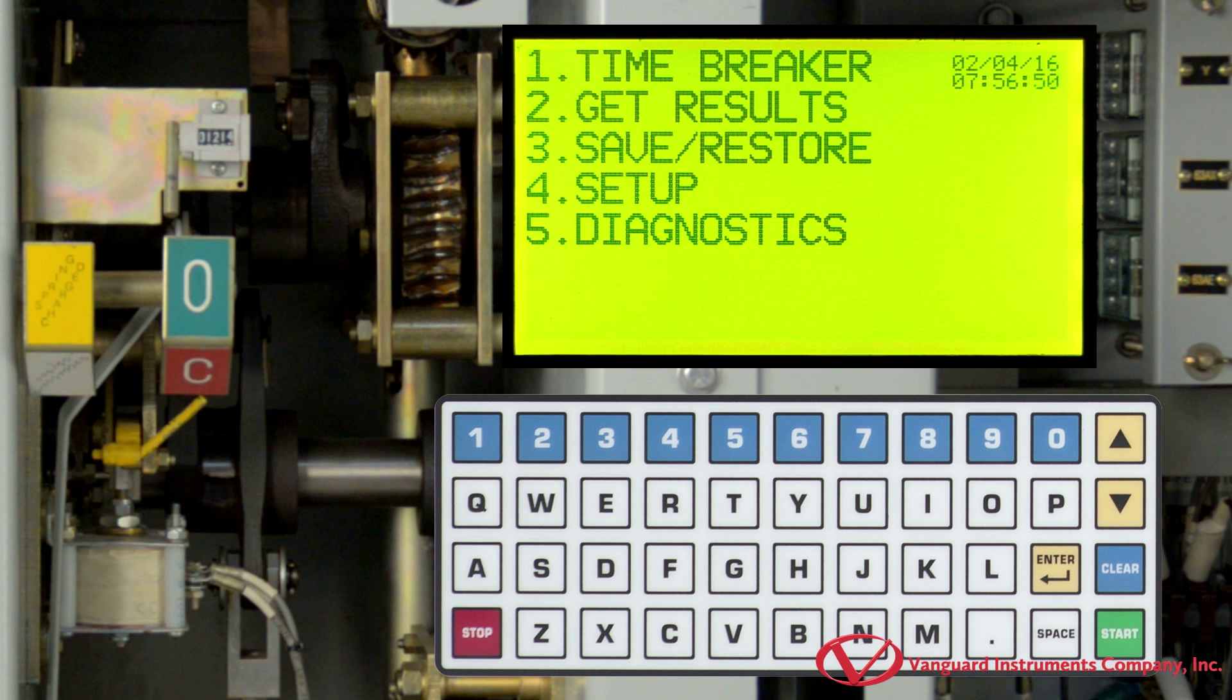Once we have performed the test, we can print the test results to the unit's built-in thermal printer. To print the test results, select Get Results by pressing the 2 key.